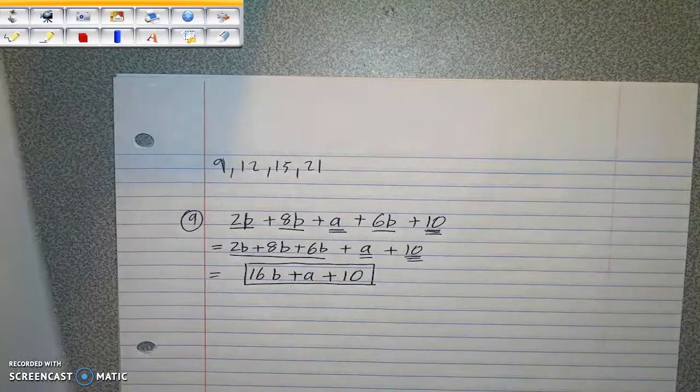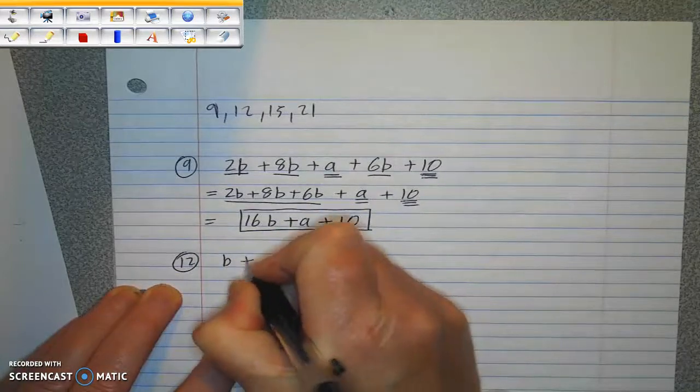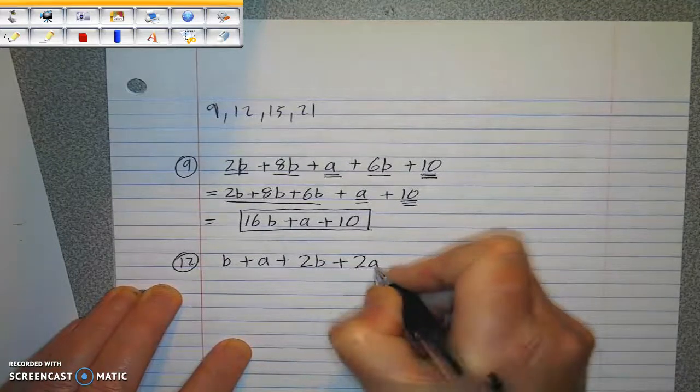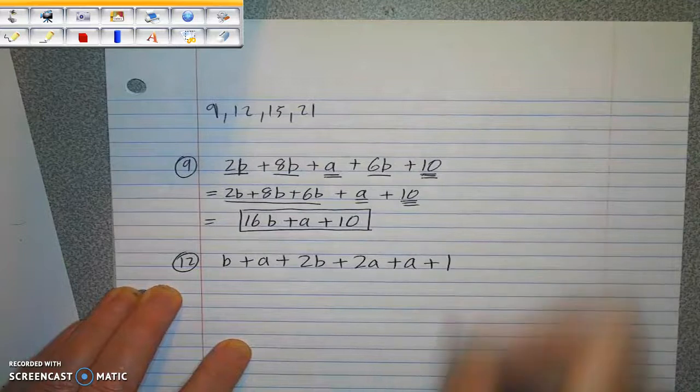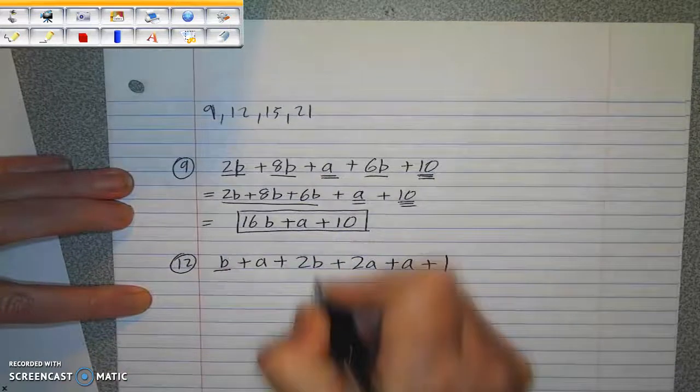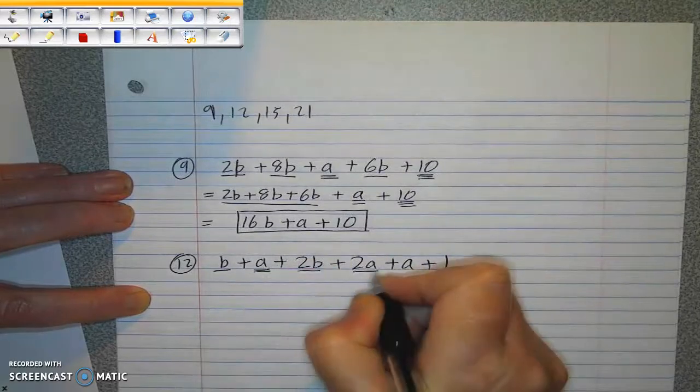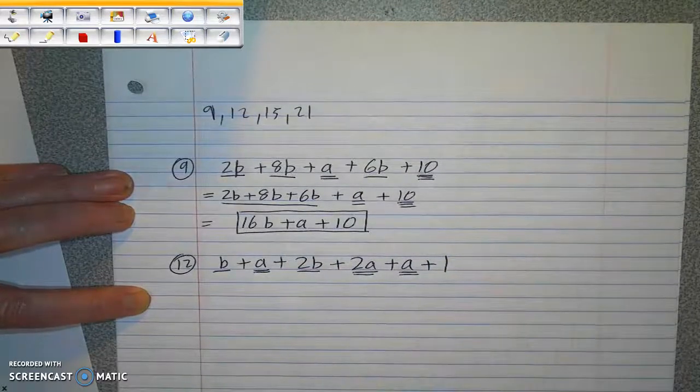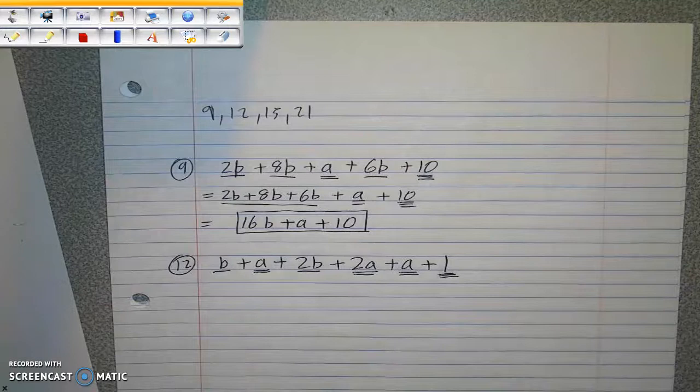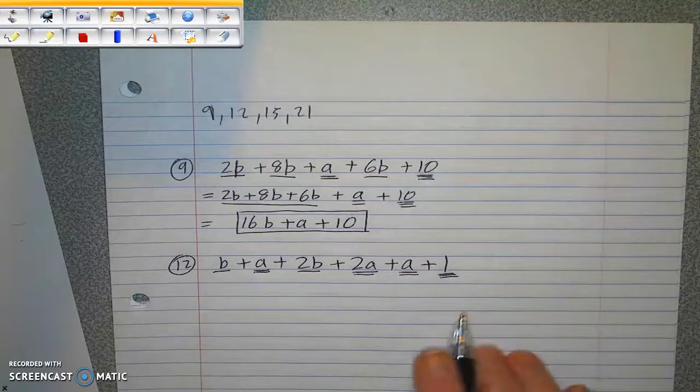Let's do number 12 together. B plus A plus 2B plus 2A plus A plus 1. So I'm going to go along underlining. One underline for the B, and there's another term with the B. Two underlines for the A. Any other terms with A get two underlines. And the constant term gets three underlines. Sometimes there'll be more than one constant term. It looks like most of these just have one constant term, but that's not always the case.